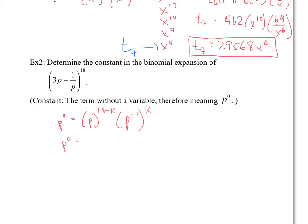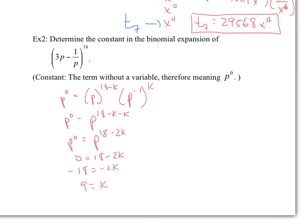You have p to the power of 0 equals p to the 18 minus k, times p to the negative k — which is minus k. So p to the 0 equals p to the 18 minus 2k, applying laws of exponents. Since we have the same base on both sides, we can equate the exponents. Bringing the 18 over and dividing by negative 2 — this is a good place to check: if k is not a whole number, something is wrong. k is a whole number, so we're good.